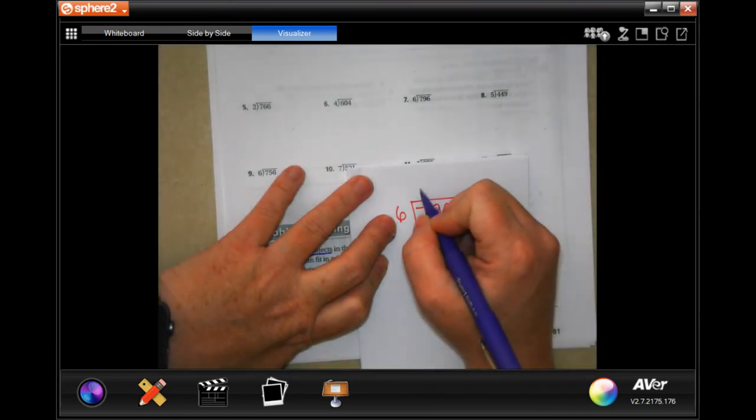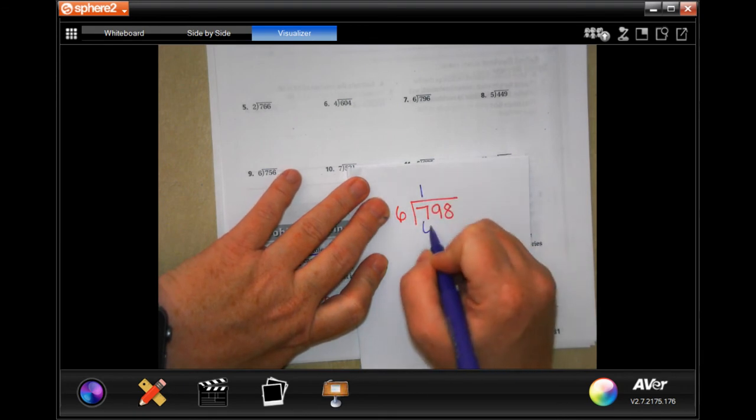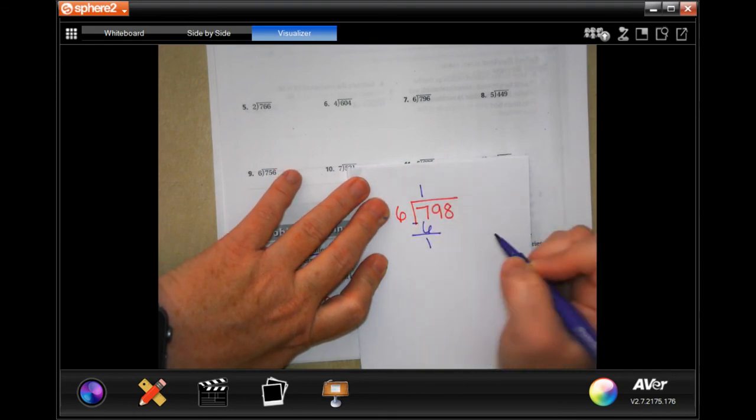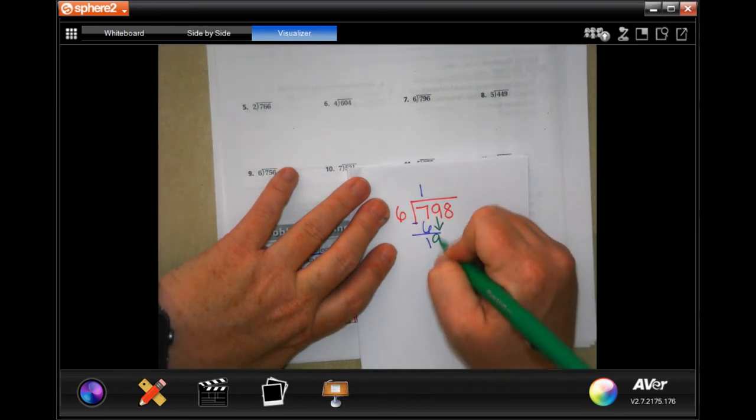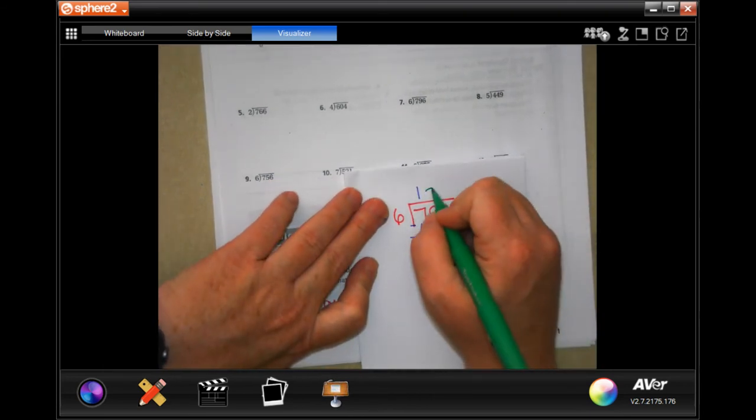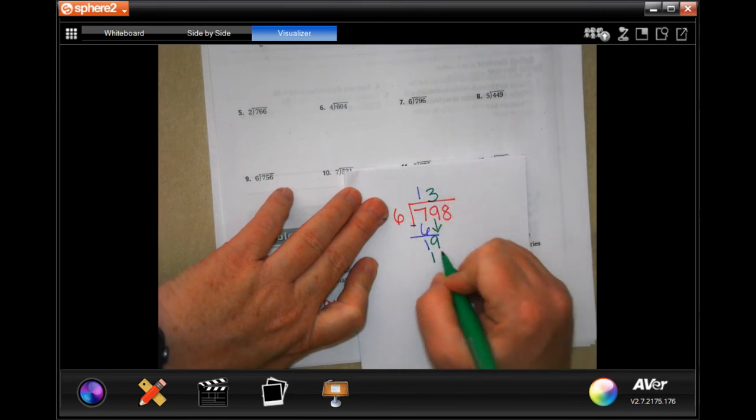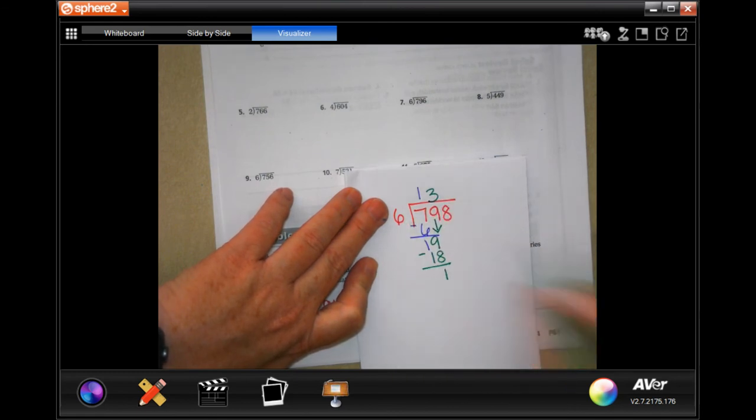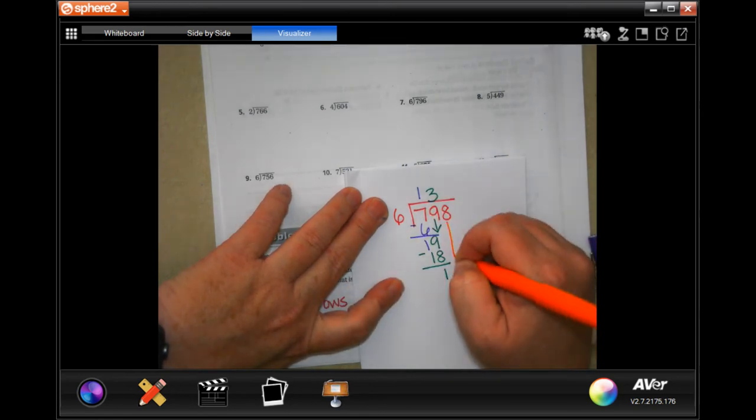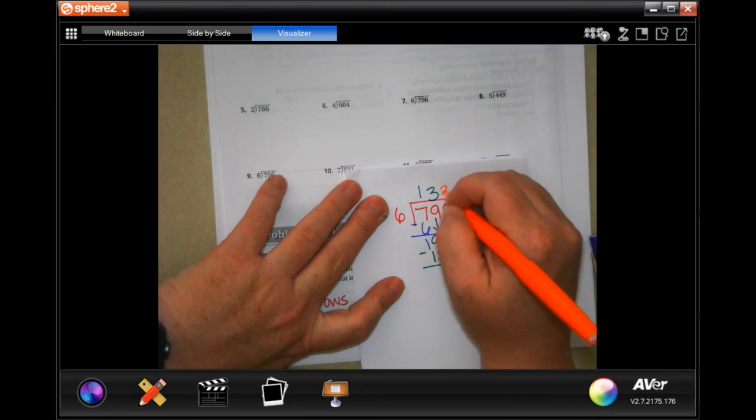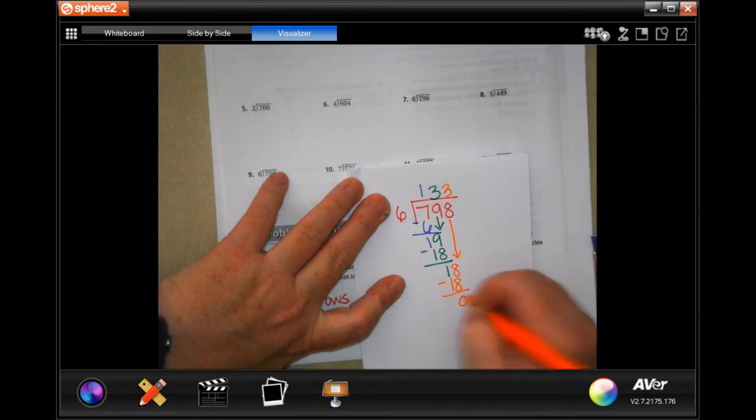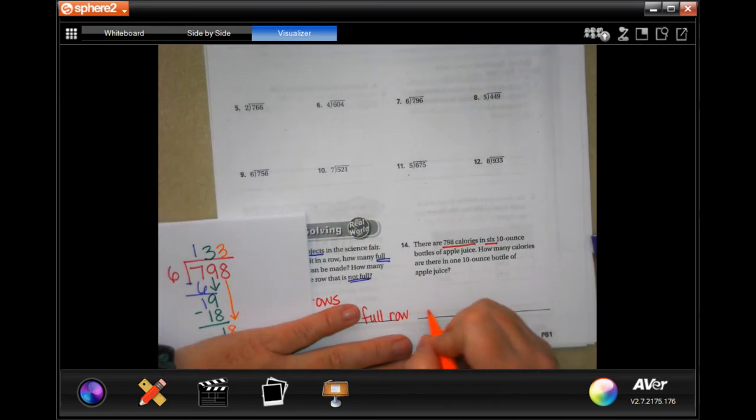So 6 will go into 7 one time. 1 times 6 is 6, subtract 1. 1 is smaller than 6. So I can bring down my 9. 6 will go into 19, 3 times. 3 times 6 is 18. Subtract 1. 1 is still smaller than 6. So I'm going to bring down my 8 for 18. So 6 will go into 18 3 times. Subtract, get 0. So 133 calories.